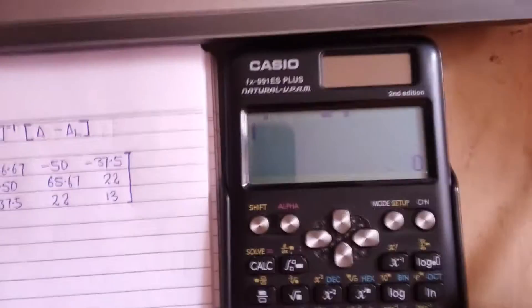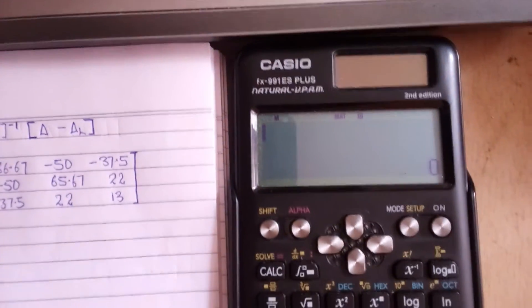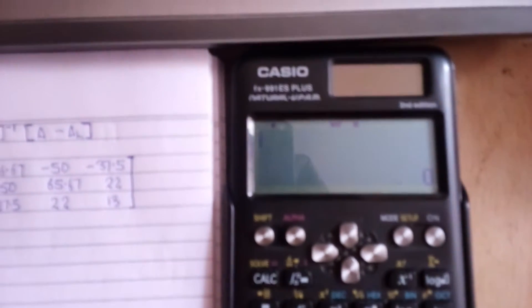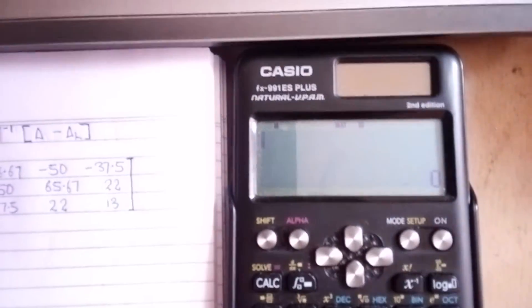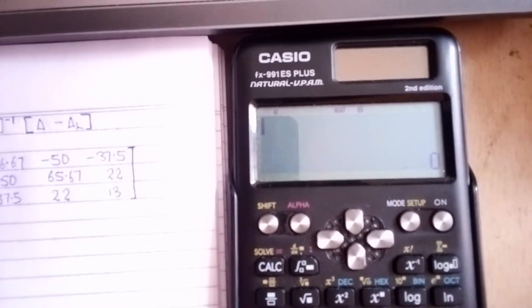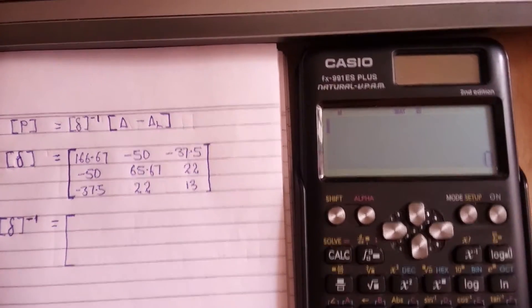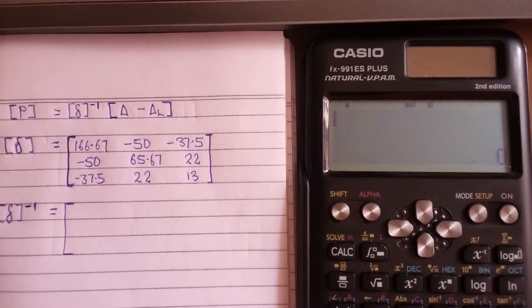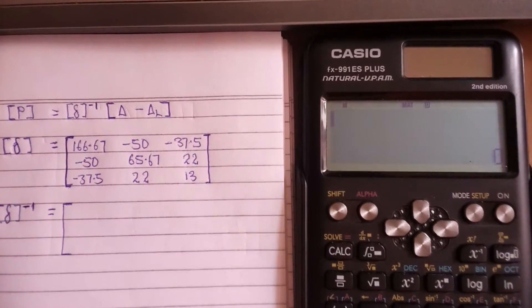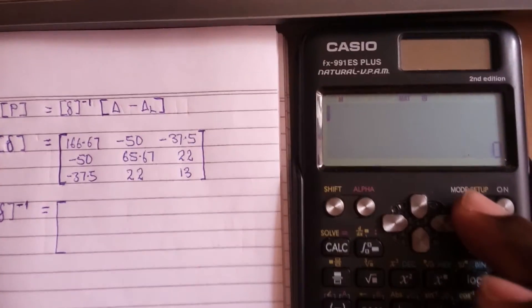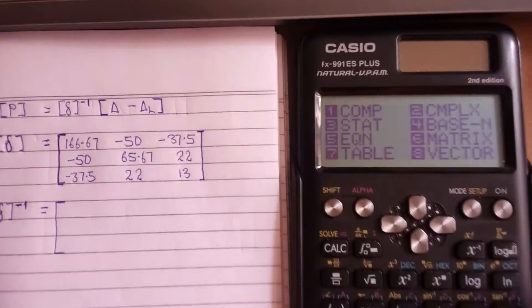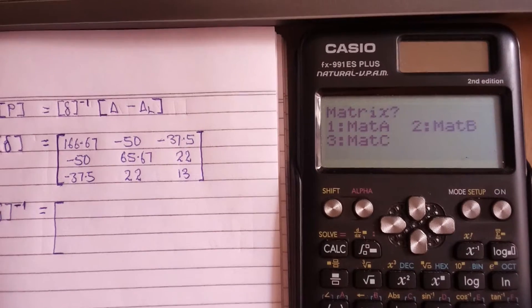I want to find the inverse of this matrix. In your Casio calculator fx-991ES Plus, first of all before you start calculating the inverse, you have to press mode, then you see matrix there, you press 6.